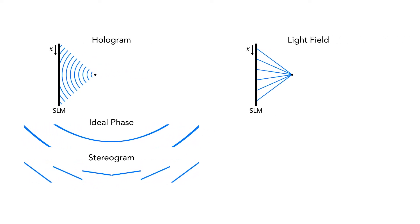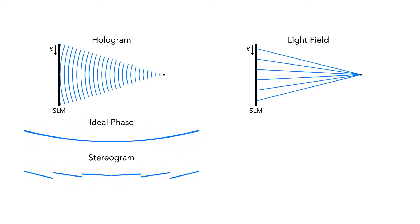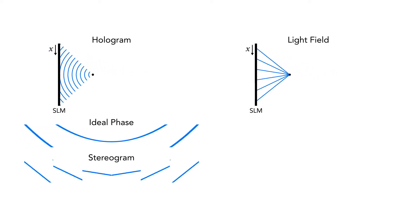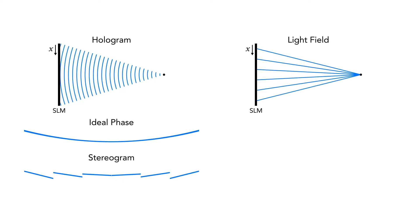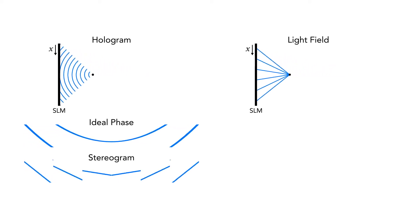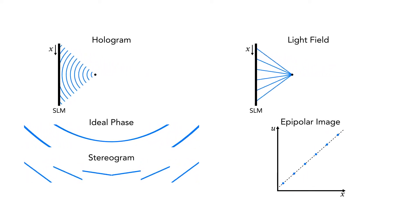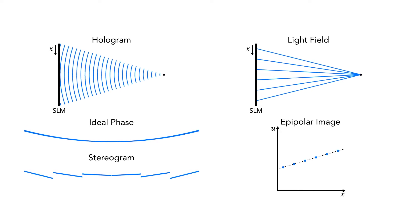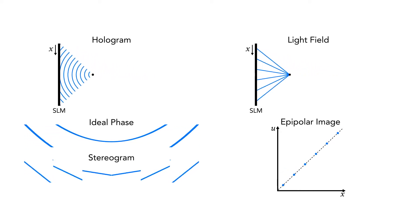To better understand the stereogram, let's step back and take a look at the light field, which can be thought of as the ray optics equivalent to the hologram. Here, every ray from the point is encoded by a position on the SLM and direction. Using the two-plane parameterization, the epipolar image of the light field shows that the point becomes a line whose slope depends on the distance.